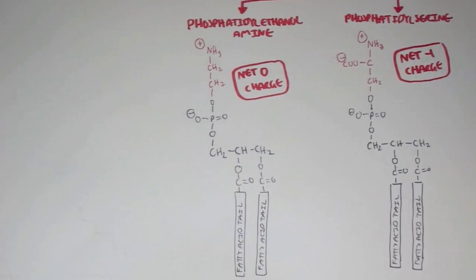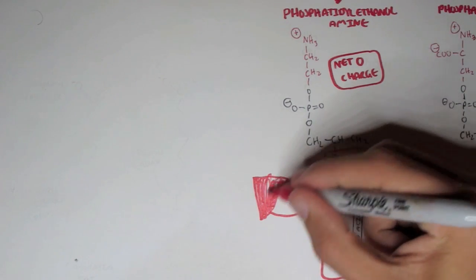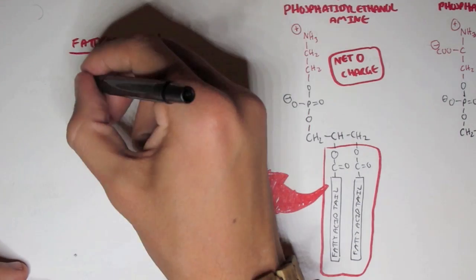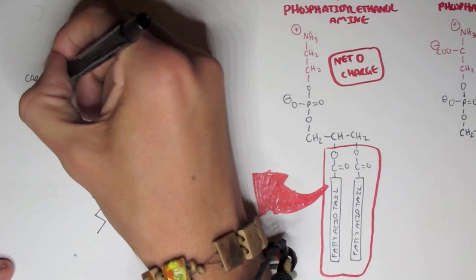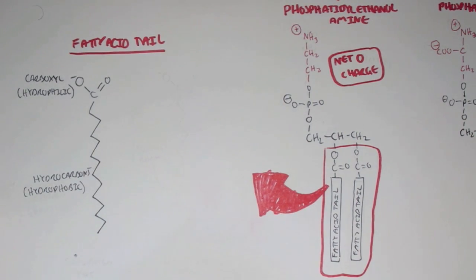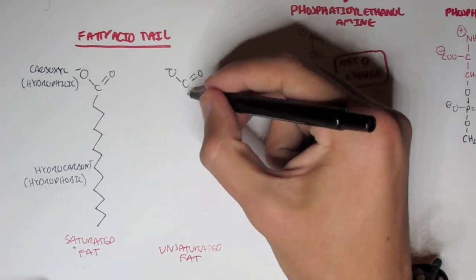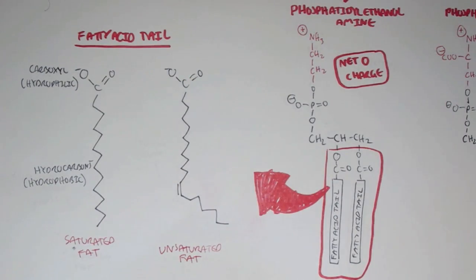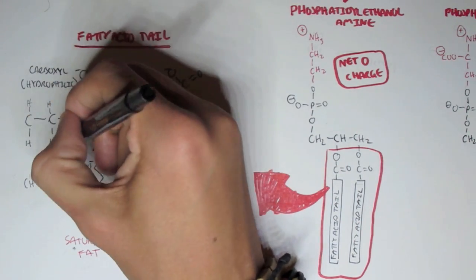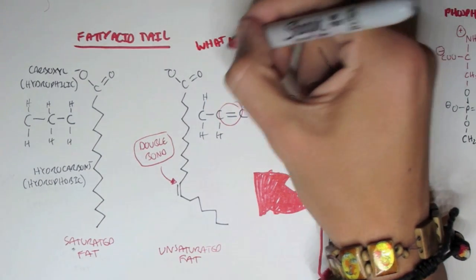Now let's look at the fatty acid tail and what different structures it can form. A typical fatty acid tail consists of a carboxyl group and a hydrocarbon chain. The carboxyl group is hydrophilic and the hydrocarbon part is hydrophobic. This is the typical structure of a saturated fatty acid tail. For unsaturated fat, the hydrocarbon has a bend in it — a double bond which causes the bend. The saturated fat has all singular bonds between the hydrocarbons, whereas the unsaturated fat has a double bond which causes this kink-like structure. What different characteristics do lipid membranes have if they have double bonds?